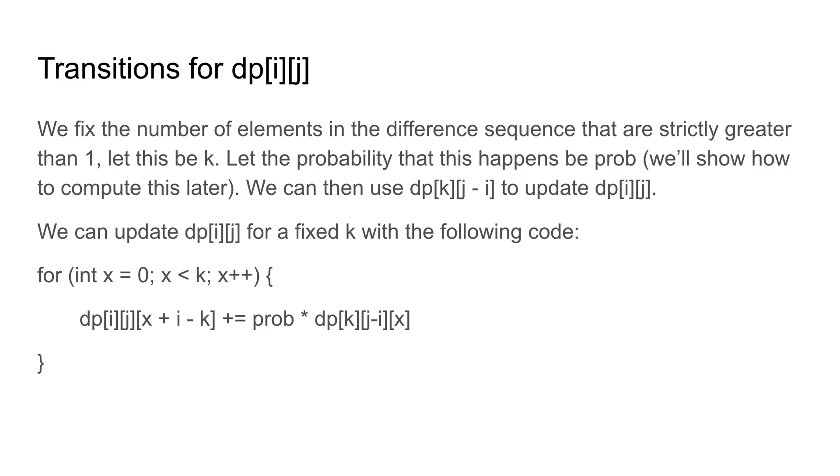The pseudocode is basically updating the last k elements of dp[i][j] with dp[k][j-i]. And this is because these are already in sorted order. So this will maintain that sorted order as we're adding these expected values.